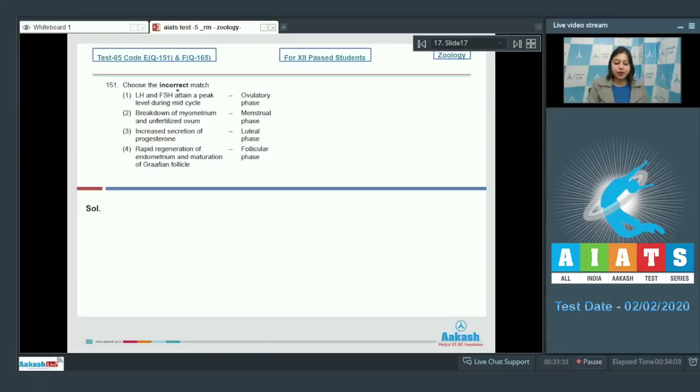Question number 151. Choose the incorrect match. We have phases of menstrual cycle and events occurring during menstrual cycle. Let us see them one by one.